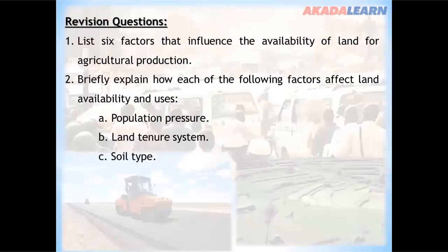Revision questions. List six factors that influence the availability of land for agricultural production. Number two: briefly explain how each of the following factors affect land availability and uses — population pressure, land tenure system and soil type. If you find it difficult to answer the revision questions, you should go over this video again.